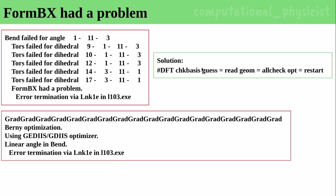For this kind of error, the solution is to add some extra input commands at the end of our input file. During optimization, you can add these lines at the end: use the hashtag command with DFT, check basis, guess=read, and geometry=allcheck, then opt=restart. This command will help us run it further and we will have a normal termination of our Gaussian job.